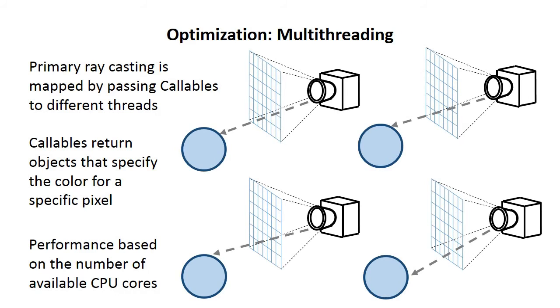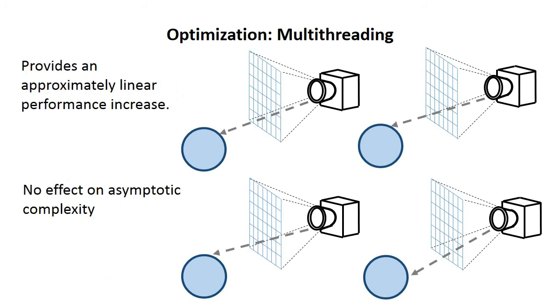In our case, that's a color value associated with the specific pixel, which we can then reduce back into the specific color and position in our output image. This really depends on how many cores you have, but it can provide an approximately linear performance increase. Unfortunately, it doesn't have any effect on asymptotic complexity, for which we have another solution.